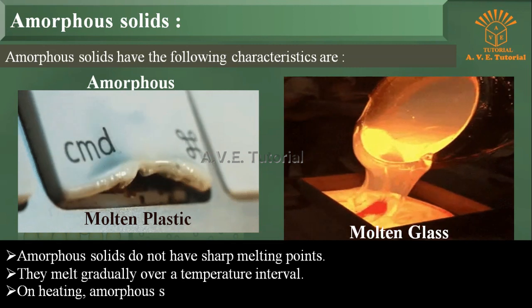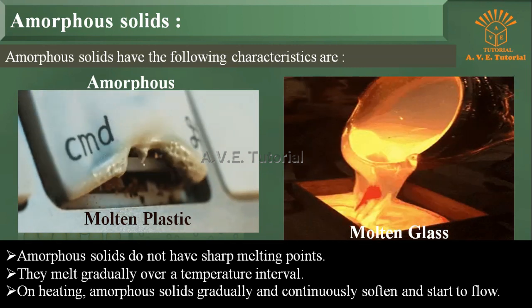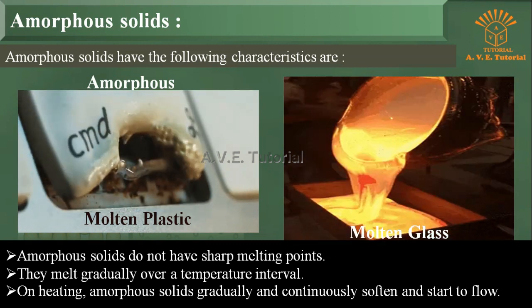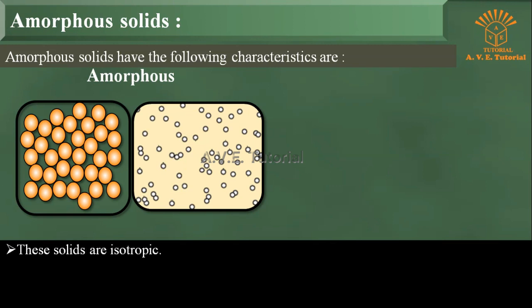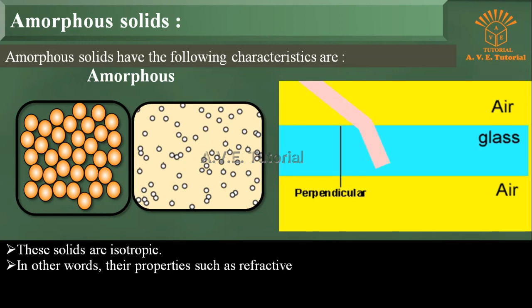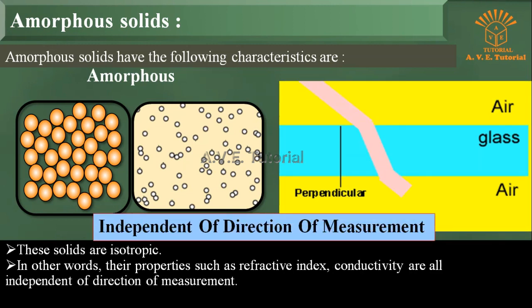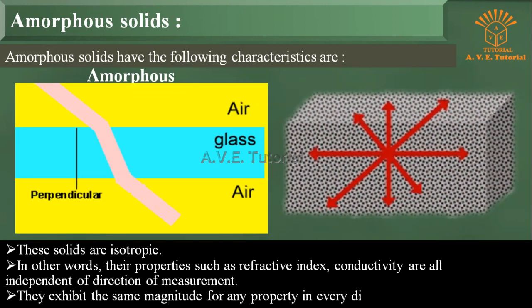Three: On heating, amorphous solids gradually and continuously soften and start to flow. These solids are isotropic. In other words, their properties such as refractive index and conductivity are all independent of direction of measurement. They exhibit the same magnitude for any property in every direction.